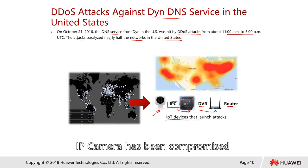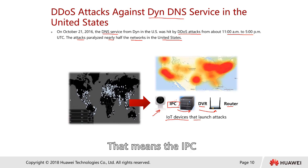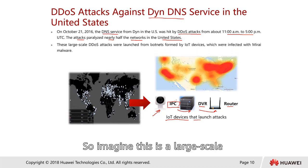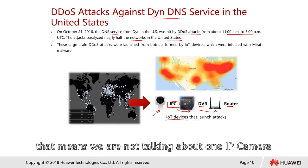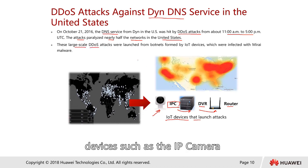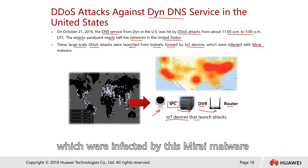If the IP cameras are compromised, there is a potential for launching an attack. The cameras themselves are the ones that launched the attack. This was a large-scale attack — we're not talking about one IP camera, but millions and millions of devices. This attack was launched from a botnet formed from IoT devices injected by the Mirai malware.